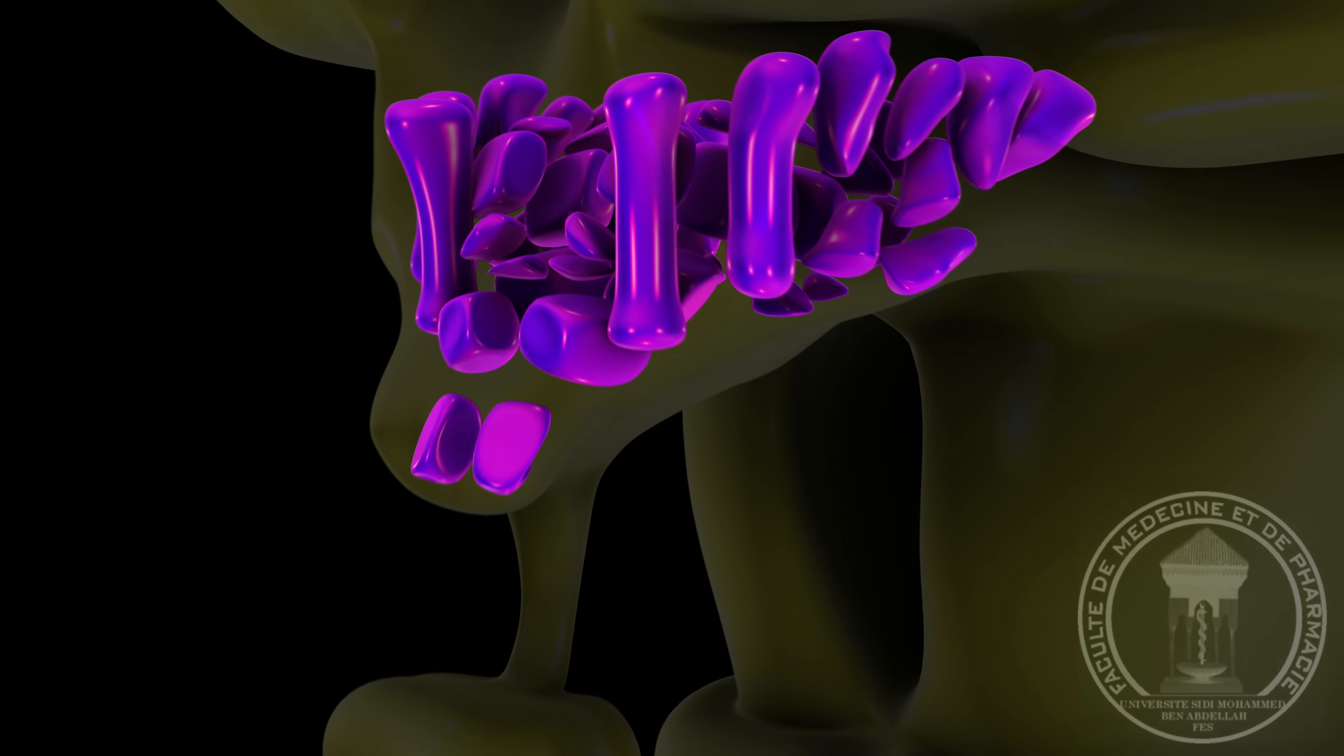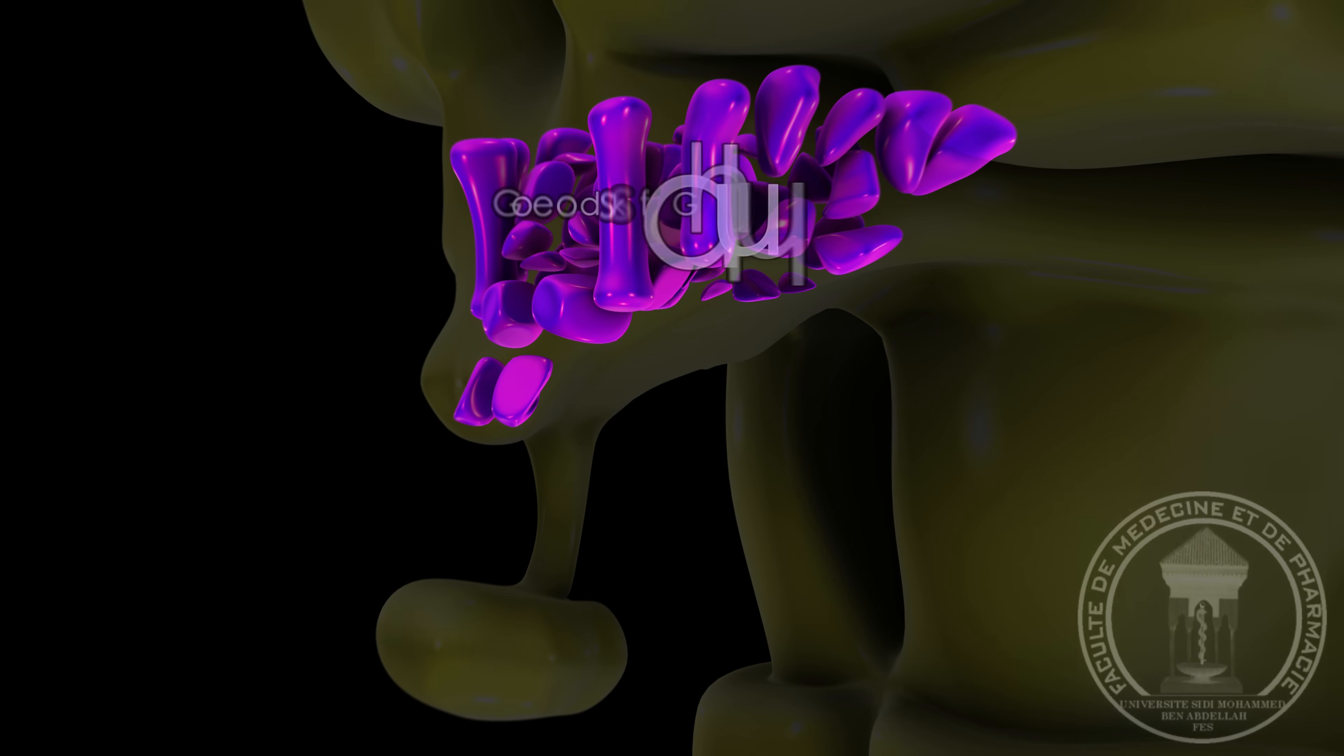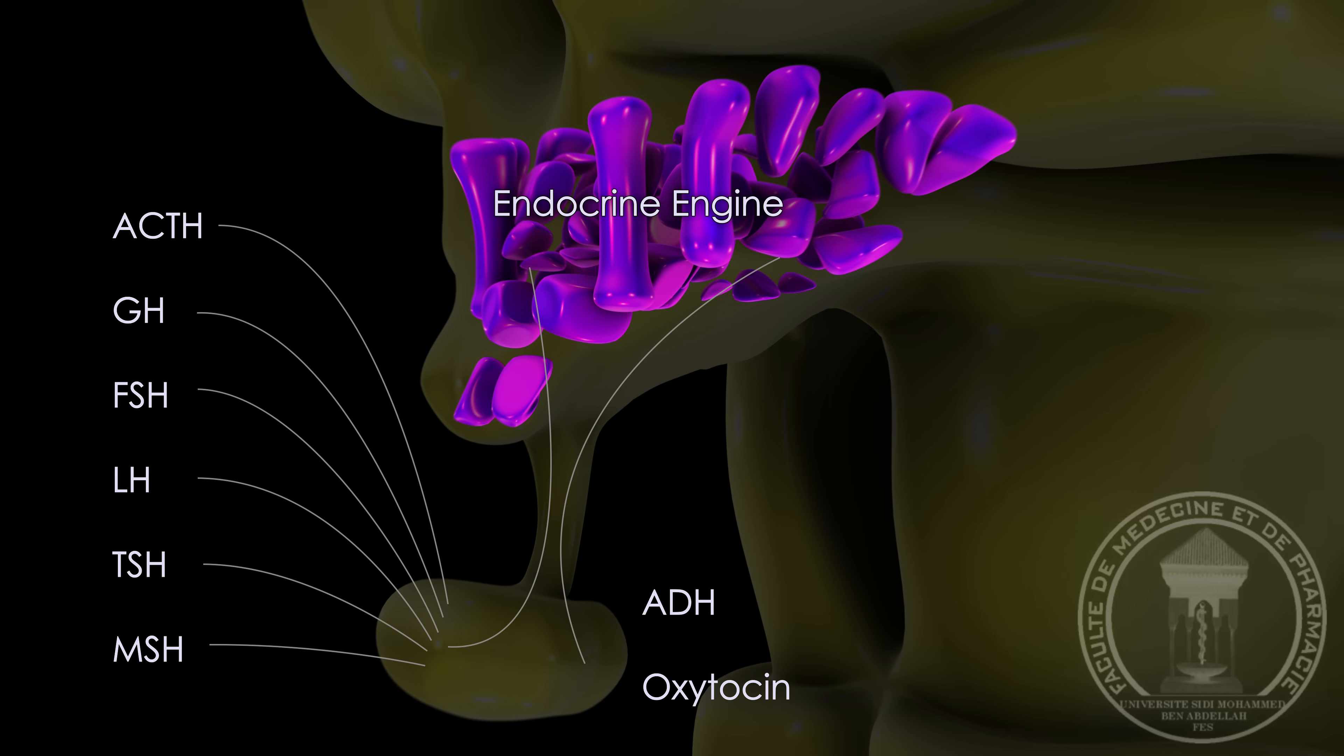The hypothalamus is the real endocrine engine of the whole body. It controls the secretions of the pituitary gland, which produces the most important hormones of the body.